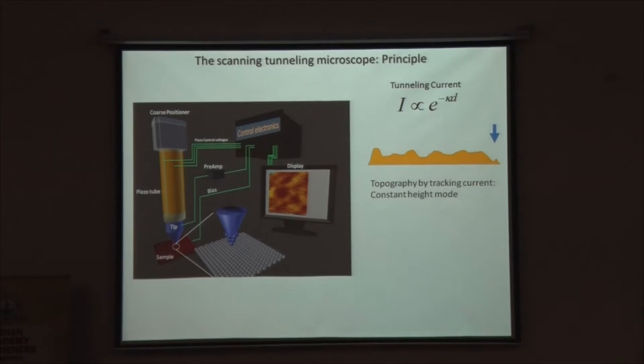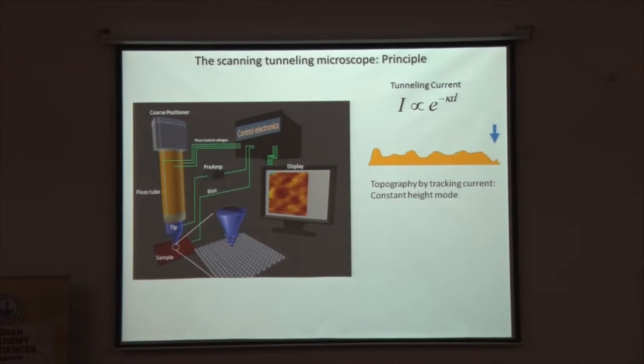This process of tunneling can be translated to build a microscope. You have a sample here which has a conducting surface, and you take a normal metal tip and you bring it very close. By very close I mean within about 10 angstrom from this surface, and then you will have significant probability that an electron from this surface will tunnel to this tip or vice versa. Now you move this tip—if this surface has a roughness, you will have a current that will vary because it is exponentially dependent on this distance between the tip and the surface. Therefore, you can get the topography of the surface.